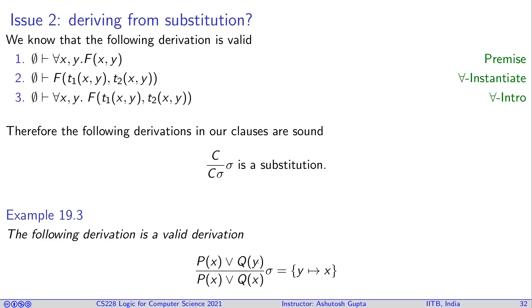The following derivation is a valid derivation. Let's suppose I give you for all P(X) or Q(Y) and then the sigma is Y maps to X. So I can simply say P(X) or Q(X). This is okay. So implicitly there was a universal quantifier X, Y. Now this is for all X. So just keep that remember, remember that there's a universal quantifier sitting in front of all the clauses.